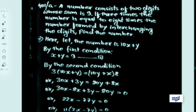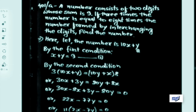A number consists of 2 digits whose sum is 9. If 3 times the number is equal to 8 times the number formed by interchanging the digits, find the number. To solve this problem we should assume certain things. Let the two-digit number be 10x plus y.